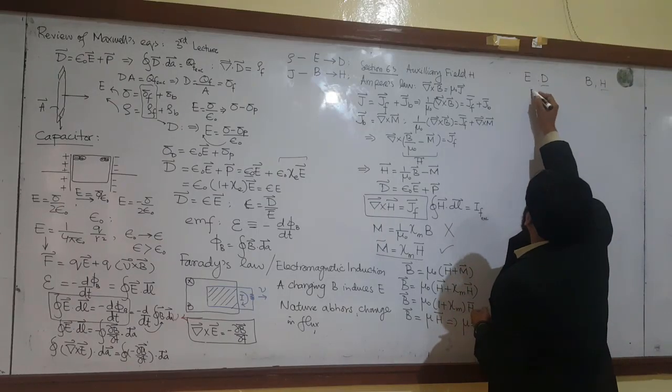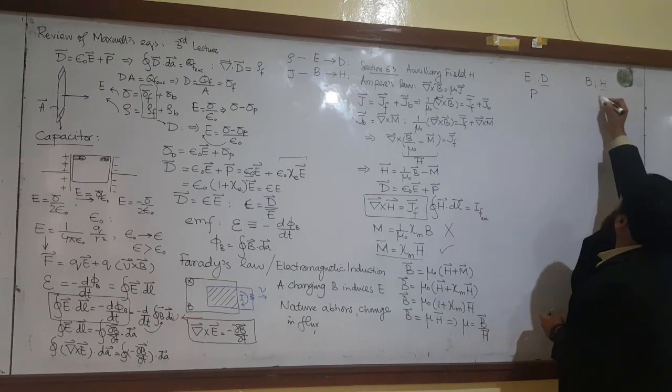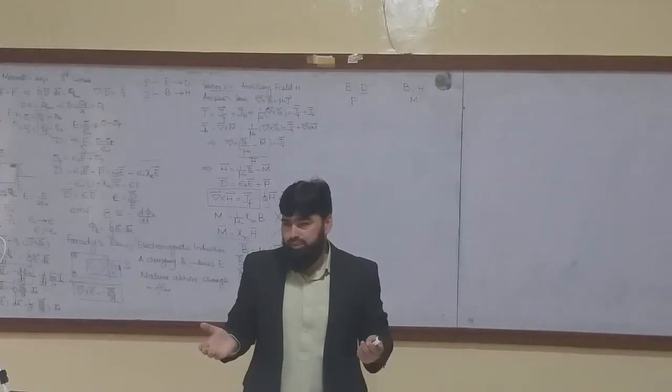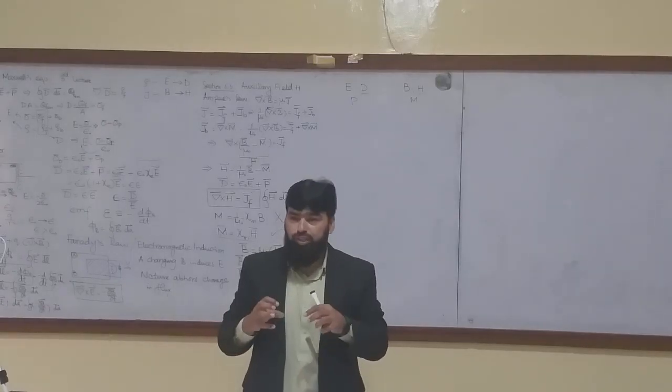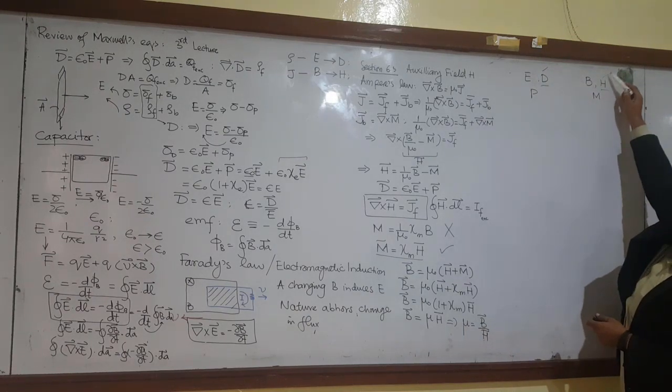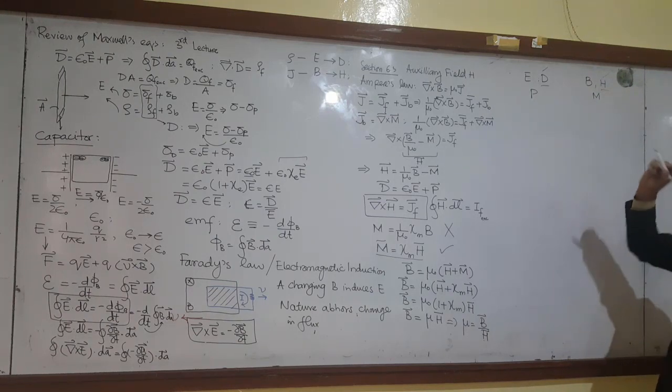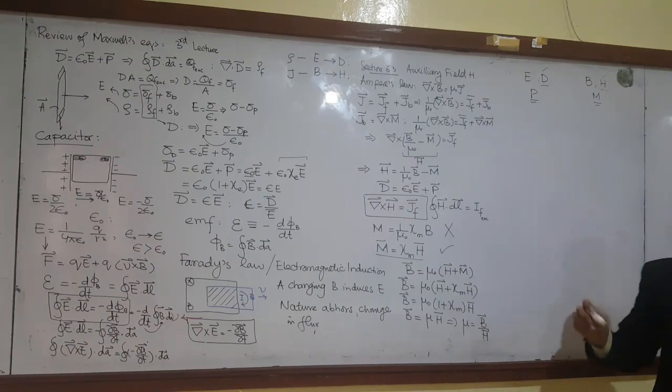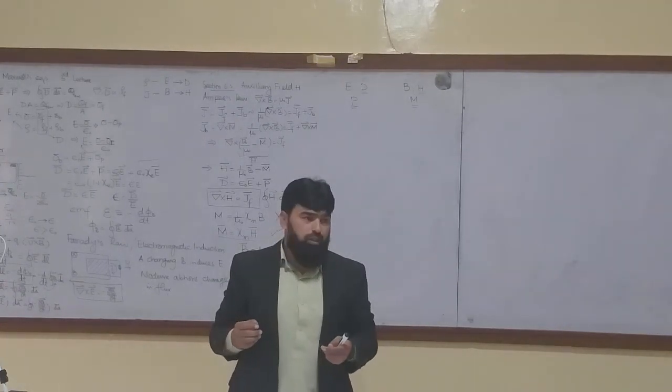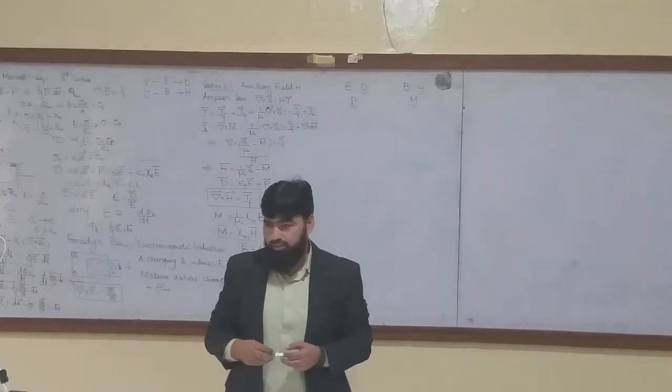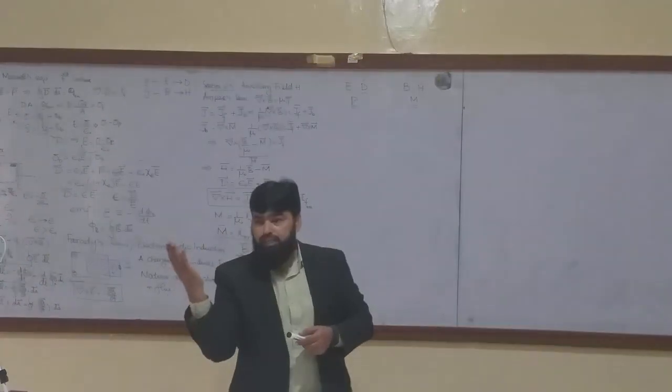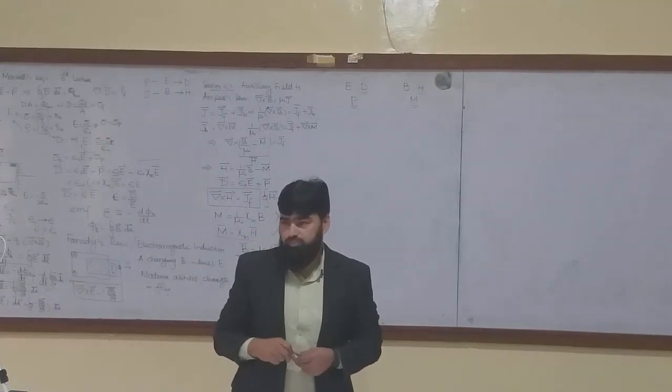There is polarization and here is magnetization. These are also fields, but these are bound fields. This D is due to free charges and this H is due to free currents. But these two are actually the contribution from the bound charges and bound currents. Now you will say how the bound can be called a current. So you see, it is bound, but as it rotates, means it takes torque, then it contributes to the current. Clear?